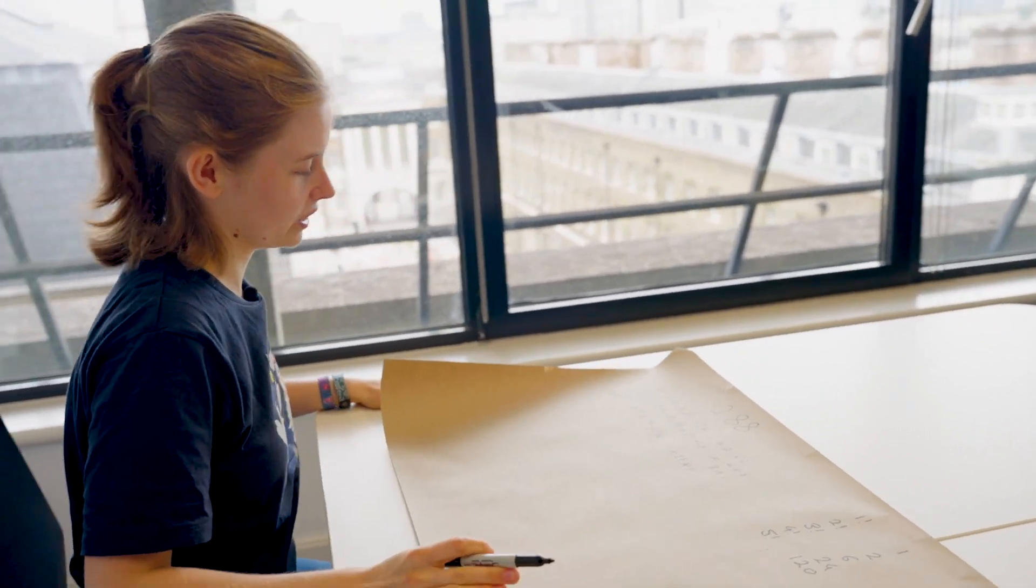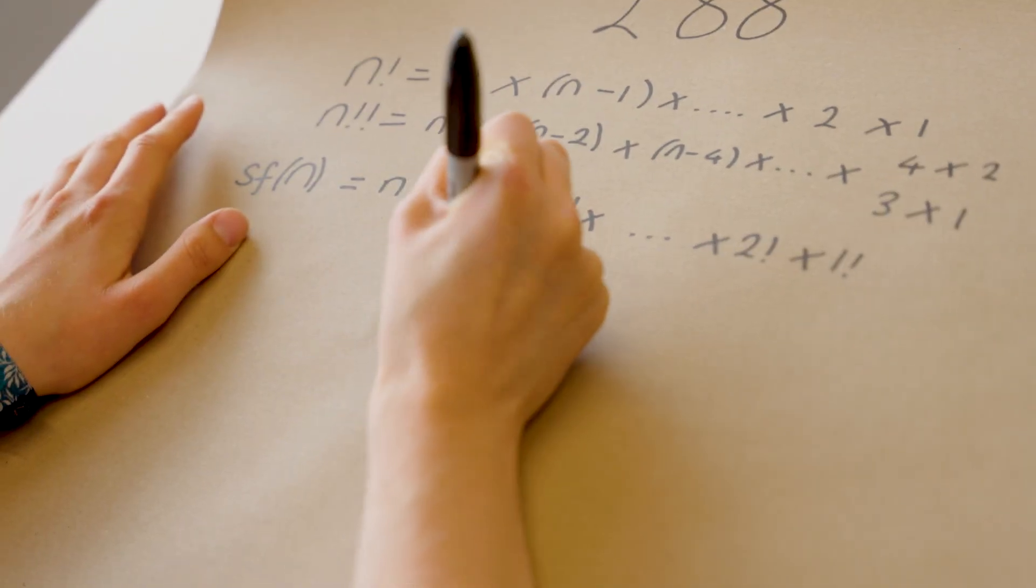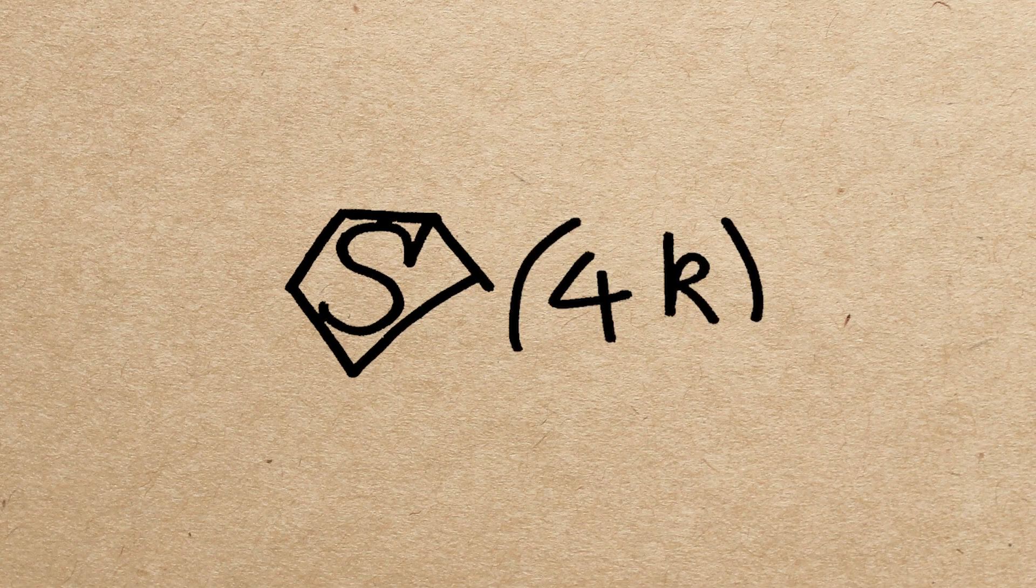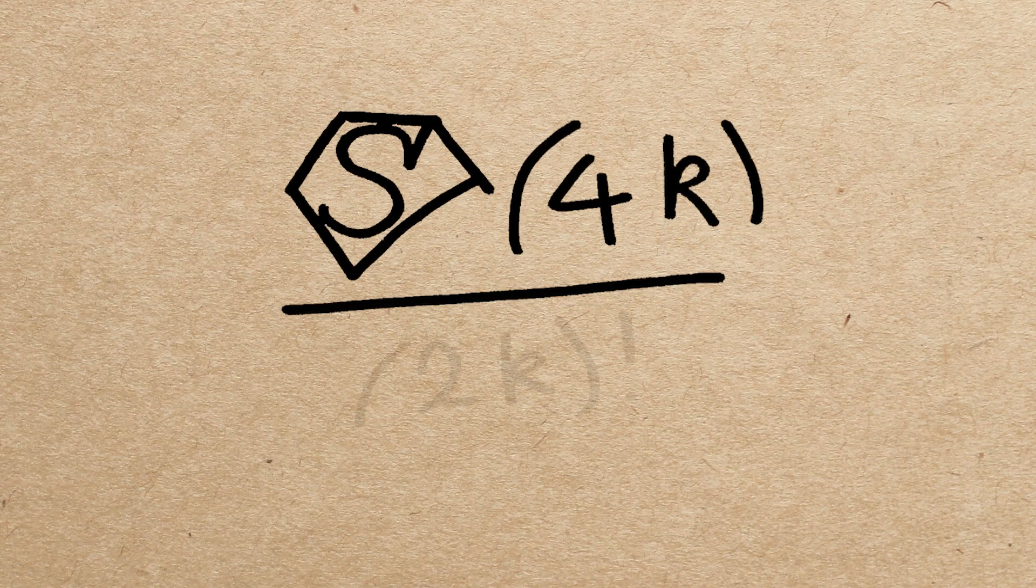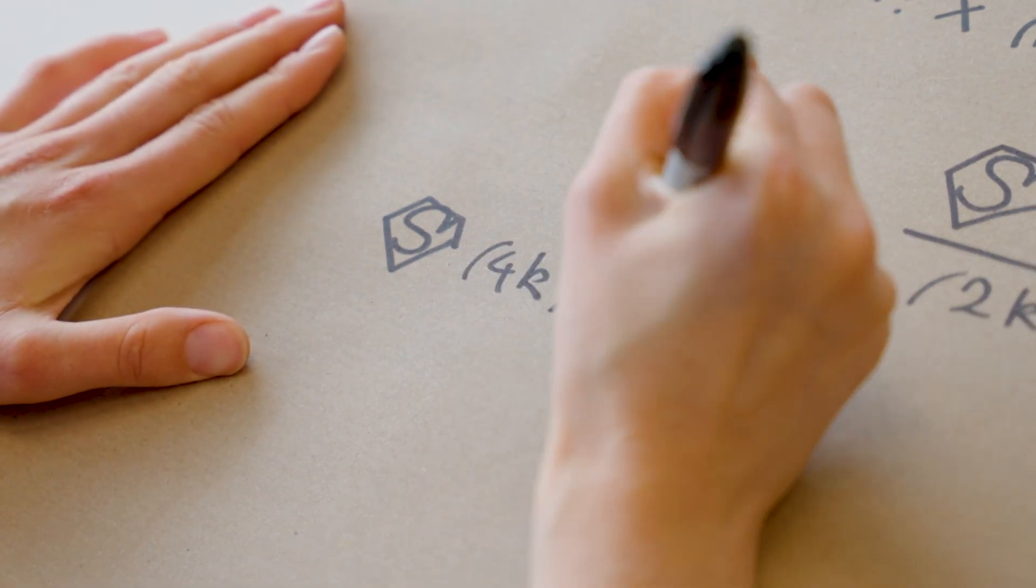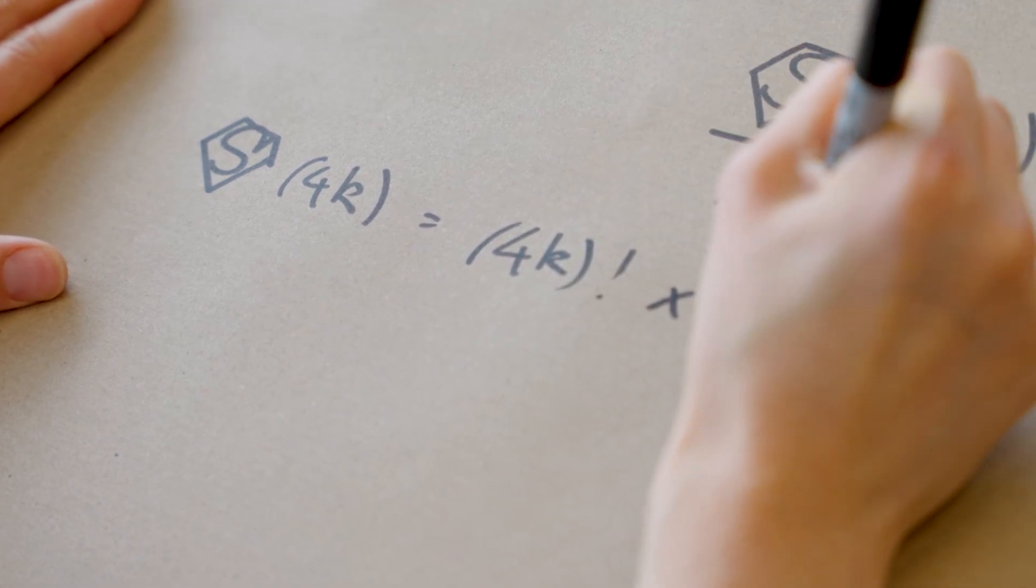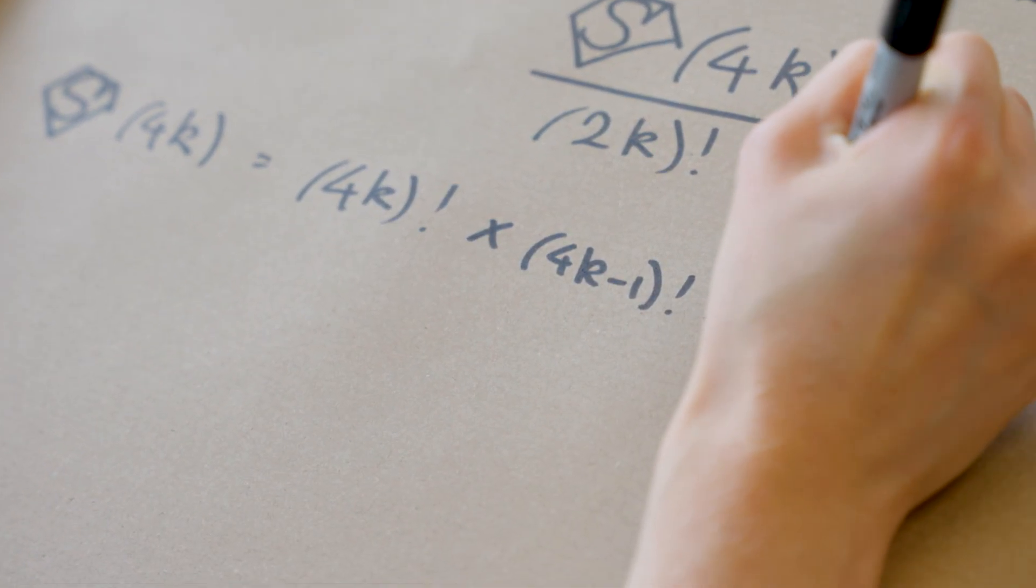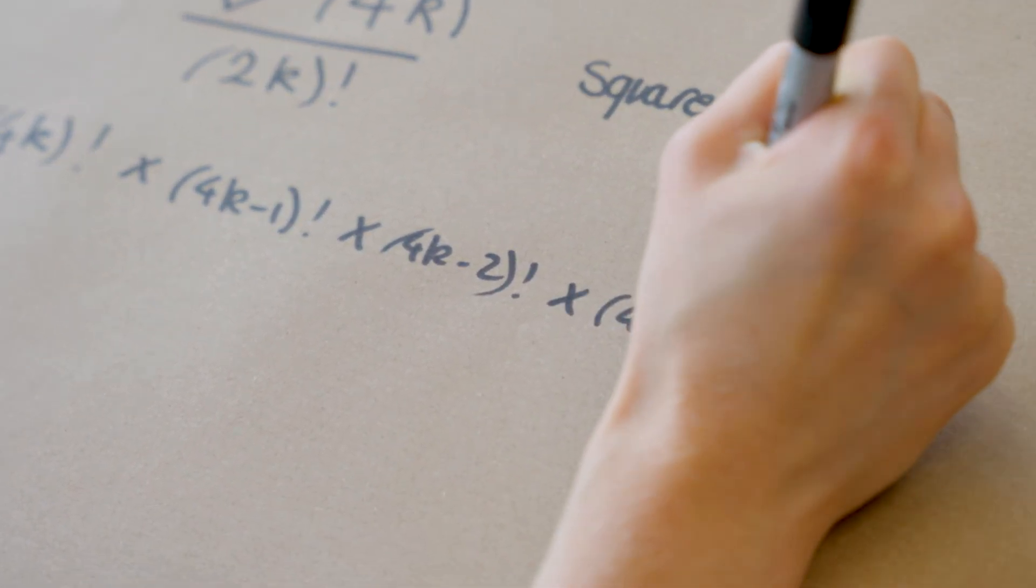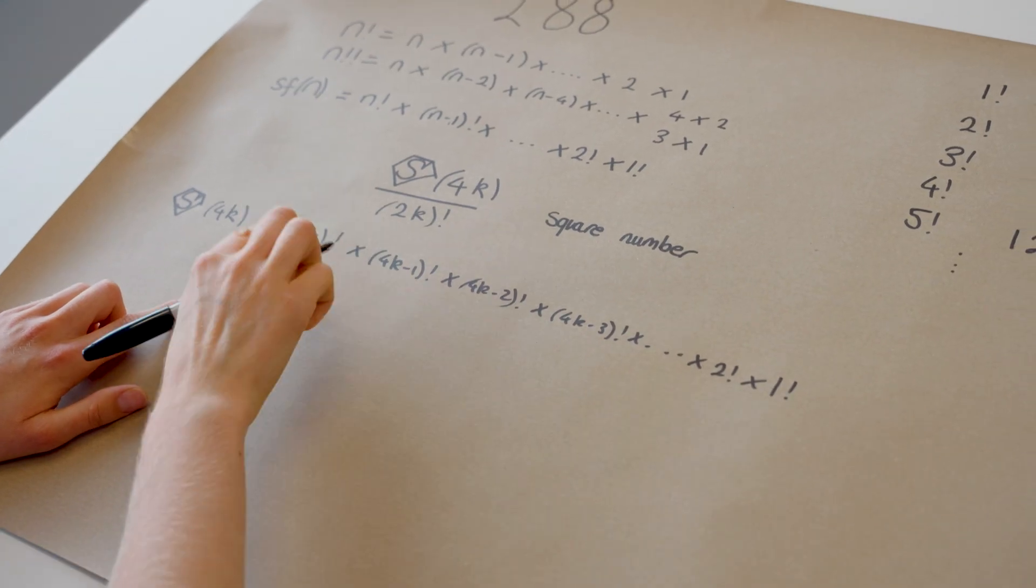So what can we do with the superfactorials? Before we move on to my favorite number, which some of you might have spotted elsewhere on a paper, but we're going to hold our horses there. Well, the cool thing is that, for example, if we look at for some number k, 4k superfactorial, take that and we divide it by 2k factorial, you always get a square number, which I don't think is obvious, but we can show it. Because let's look at this 4k superfactorial, that's going to be 4k factorial times 4k minus 1 factorial, times 4k minus 2 factorial, times 4k minus 3 factorial, times and so on, times 2 factorial times 1 factorial.